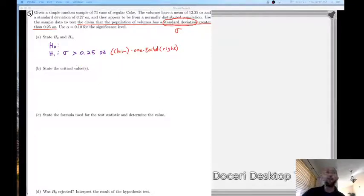Our null always includes an equal sign. And so our null here is equal to 0.25 ounces. So it is believed that the population of Coke soda cans has a standard deviation throughout their volumes of 0.25 ounces. But this person measured 71 Coke cans and found that they had a 0.27 ounce standard deviation. They say well hey that's higher than what Coke claims to provide.